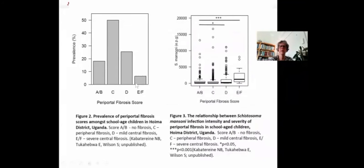If you look at the relationship between egg counts, intensity of infection, and fibrosis score, there is a clear link between having high egg counts and having severe fibrosis. The higher the egg counts, the more risk of severe fibrosis.